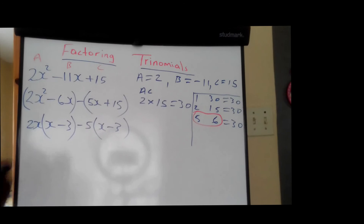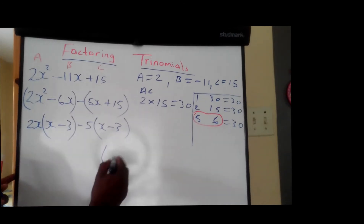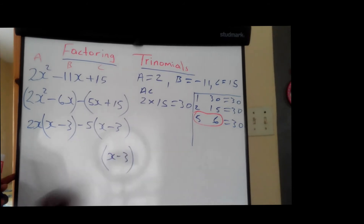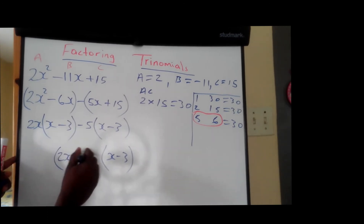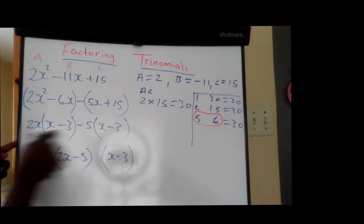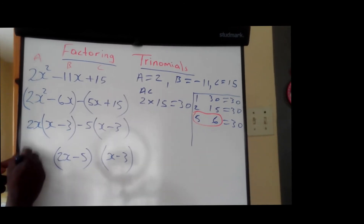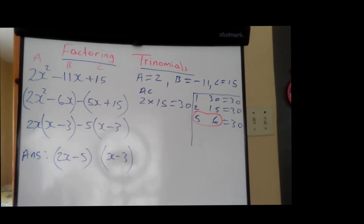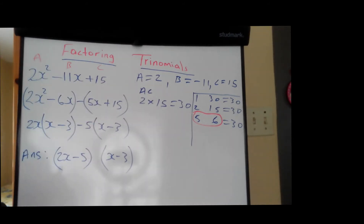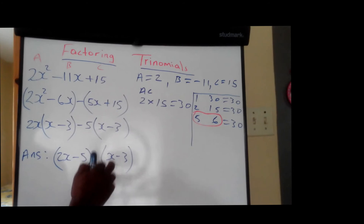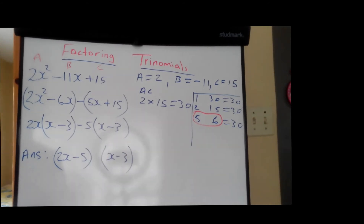So what I am going to do now is to write back one of the brackets above. So X minus 3 in bracket, then in bracket we have 2X minus 5. This is our answer. So this is how we factorize the trinomial. Our answer is, in bracket, 2X minus 5 and X minus 3.